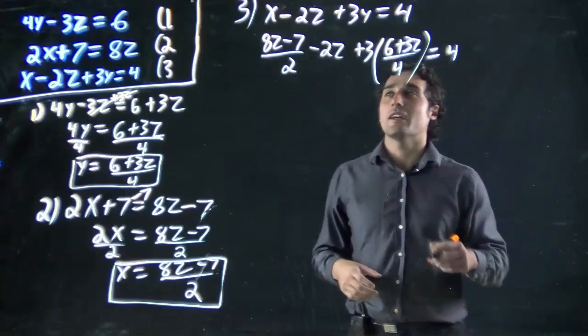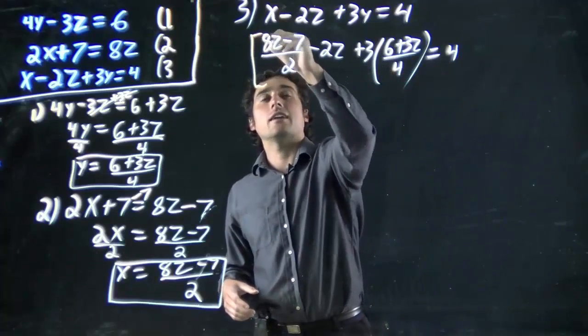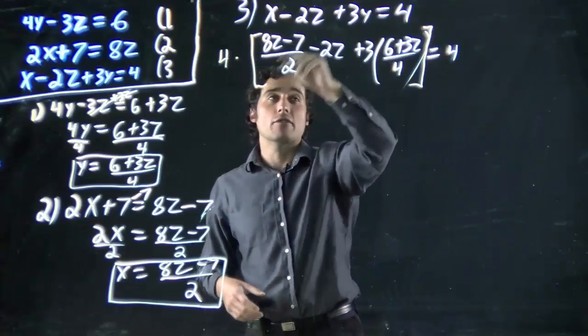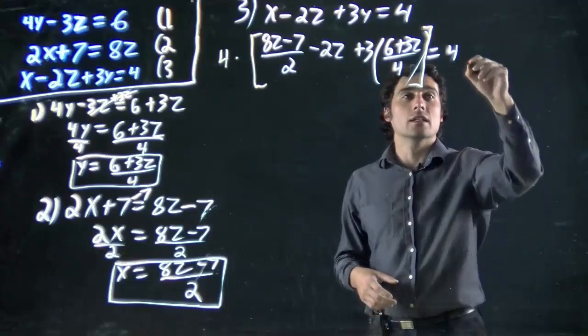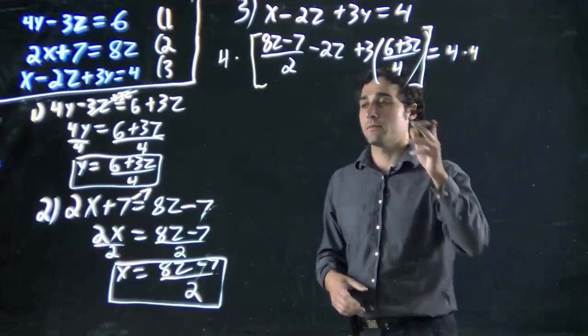What am I doing? I'm multiplying everything by 4. This entire left-hand side, I'm multiplying by 4, so every term in there will be multiplied by 4. And of course, I'm multiplying this term by 4 as well.